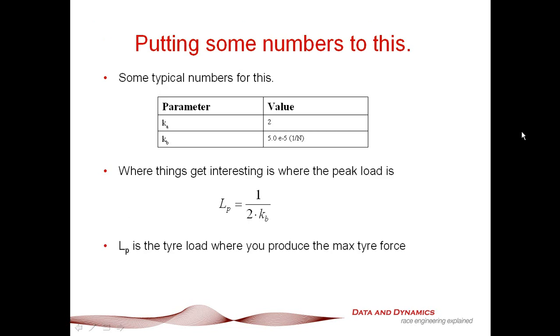Okay, so let's get some numbers to this. Okay, firstly, for some typical open-wheeler numbers, we've got a Ka of 2 and a Kb of 5 times E to the minus 5. However, where things get really, really interesting is where we can express the peak load as 1 over 2 times Kb. What the peak load represents is where the maximum possible tire force of that model lies. That, ladies and gentlemen, is something that's really, really significant because using this, to quote the Joker from the Dark Knight in the Batman trilogy, I'm about to show you guys a magic trick.